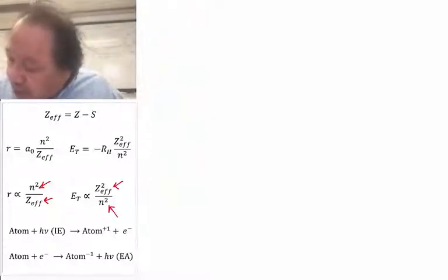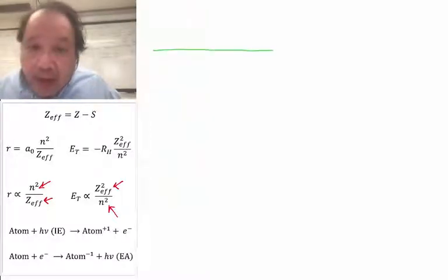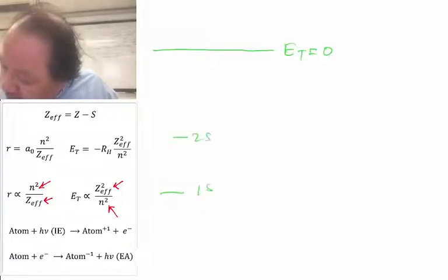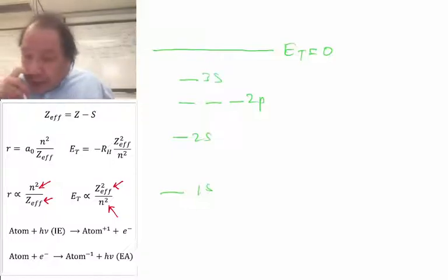The first, we'll look here. Here is the total energy, which is equal to zero at the horizon. We'll have a 1s, a 2s, 2p. I'll put a 3s. And we'll consider first neon.